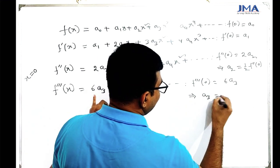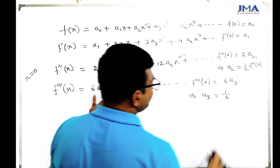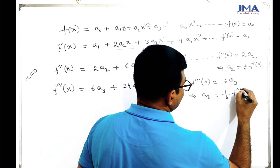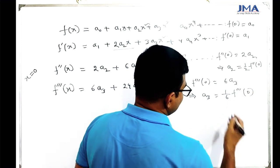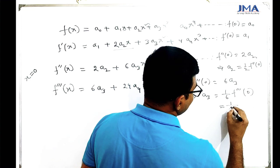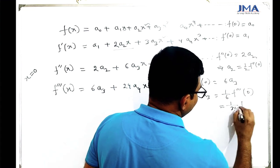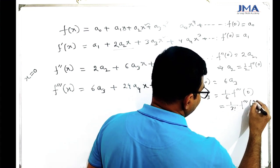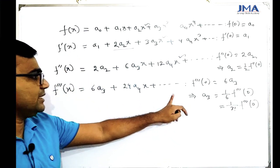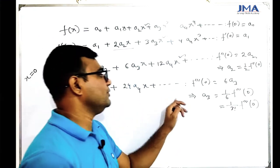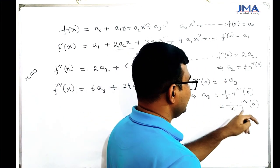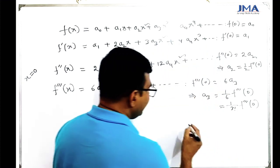A3 equals 1 by 6 times f triple prime of 0, which is 1 by 3 factorial times f triple prime of 0. If the derivative is carried out, we get a4 equal to 1 by 4 factorial times f of the 4th derivative at 0.